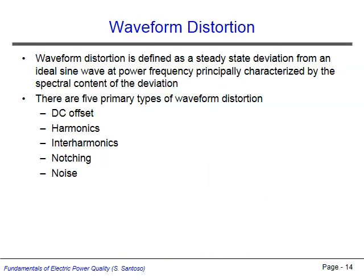Another long duration power quality issue is waveform distortion. This is any steady state deviation of the voltage waveform from an ideal sinusoid. The five primary types of waveform distortion are DC offset, harmonics, interharmonics, notching, and noise.